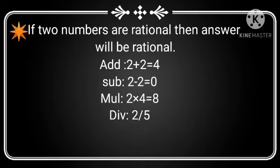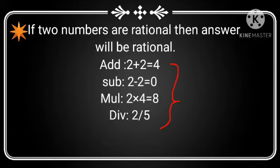Now we will see some interesting facts on real numbers. First: if two numbers are rational, then the answer will be rational. For example, 2 plus 2 equals 4; 2 minus 2 equals 0; 2 into 4 equals 8; 2 divided by 5. The answer will always be a rational number, because rational numbers consist of all natural numbers, whole numbers, integers, and fractions.